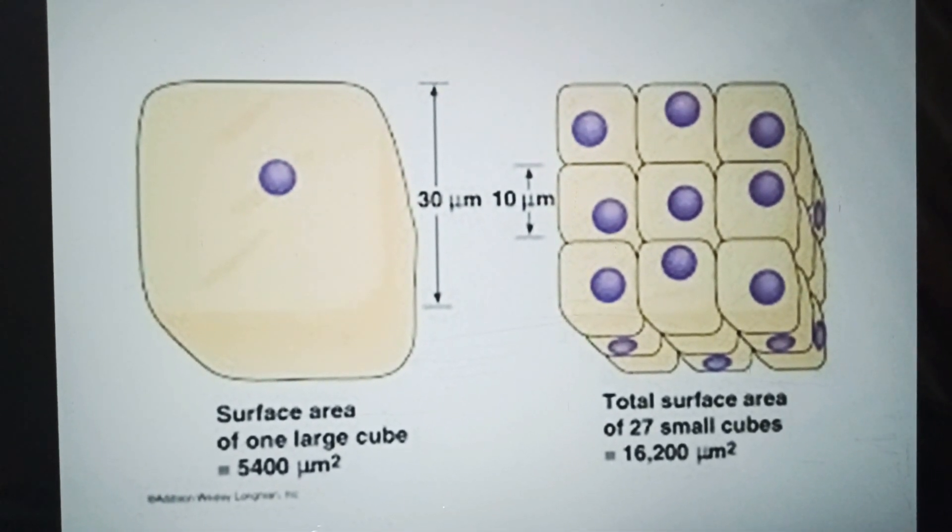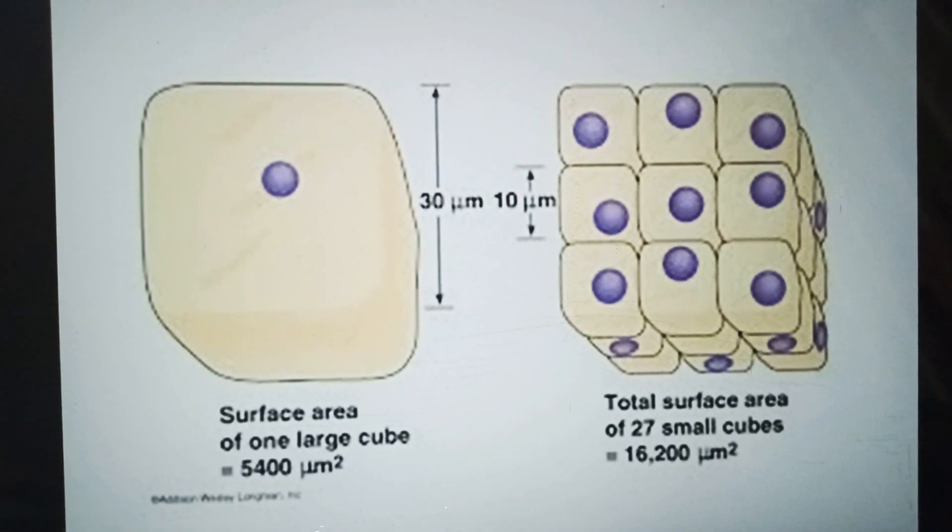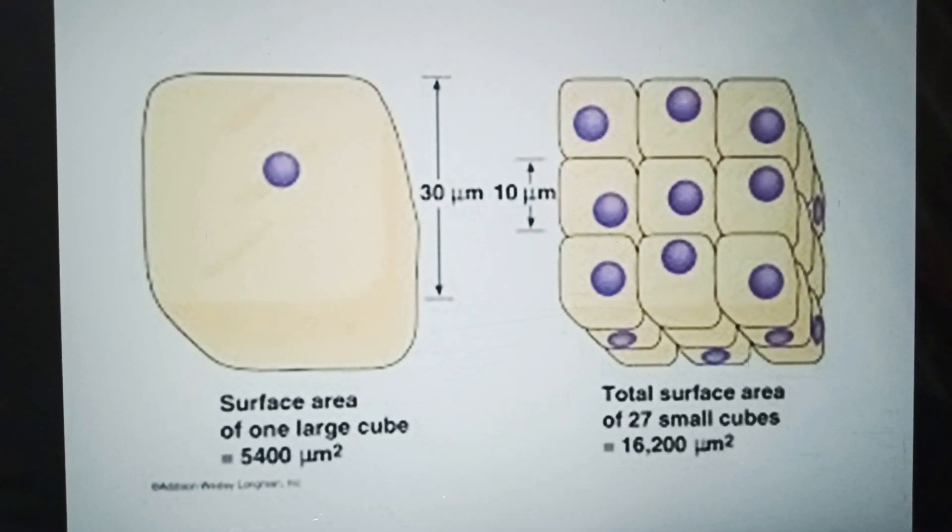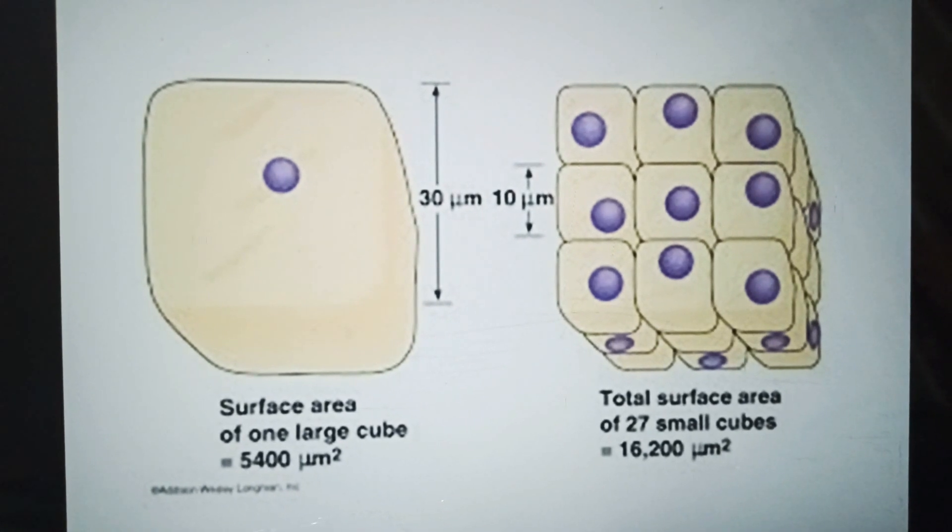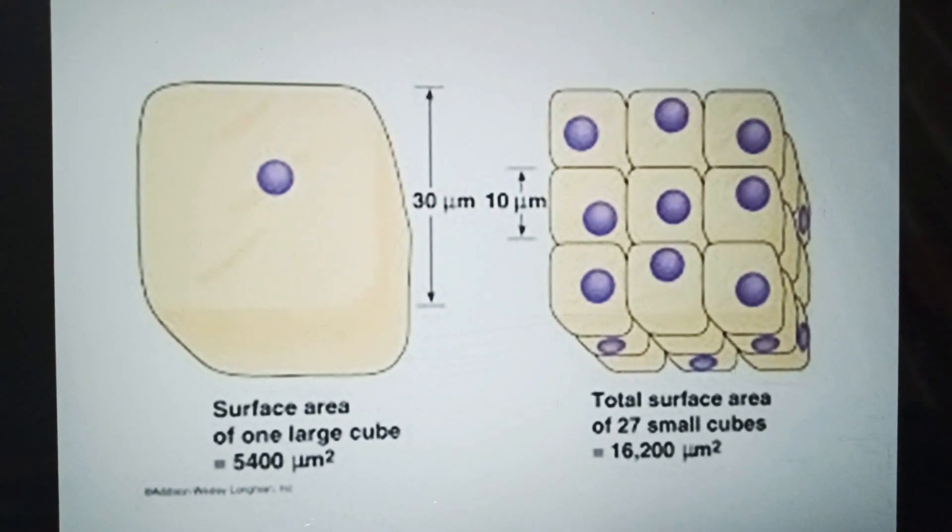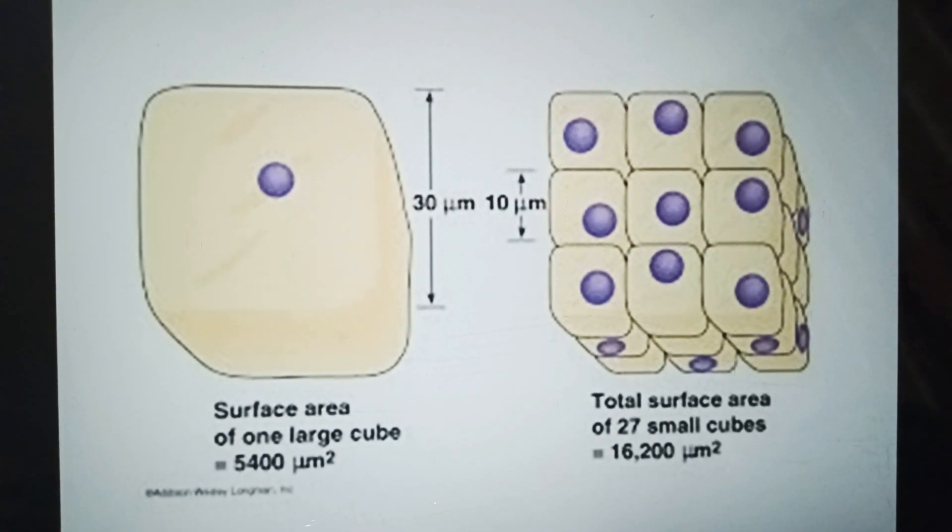Cell takes up nutrients and excretes wastes through its surface cell membrane. So a large volume cell demands large surface area. But as the figure shows, a large cell has a much smaller surface area related to its volume than smaller cells have.